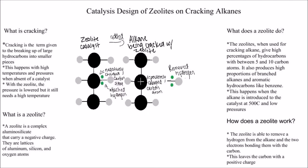The zeolites, when used for cracking alkanes, give high percentages of hydrocarbons with between 5 and 10 carbon atoms. It also produces high proportions of branched alkanes and aromatic hydrocarbons like benzene. This happens when the alkane is introduced to the catalyst at 500 degrees Celsius and low pressures.